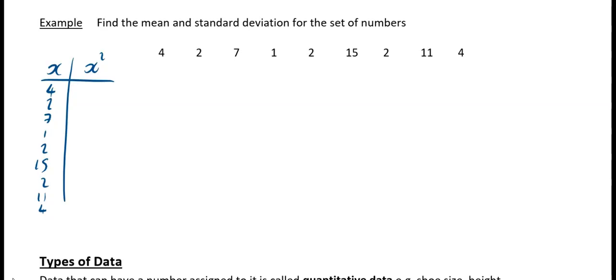So what you also need to have is your x squared, so every one of those values get squared, and you're going to have 16, 4, 49, 1, 4, 225, 4, 121, and 16. So that was just squaring all of your x values.